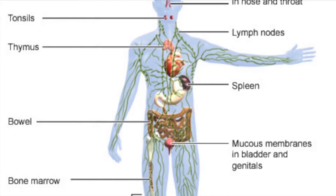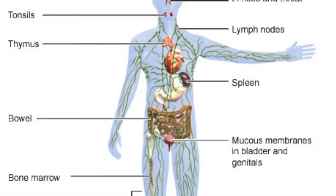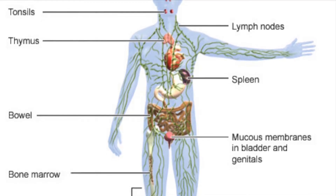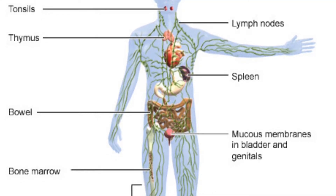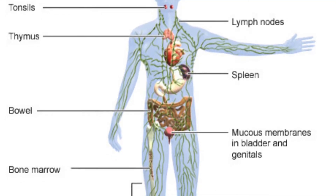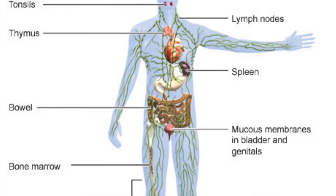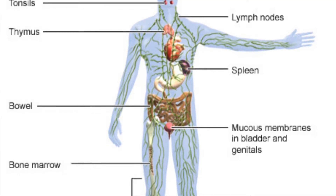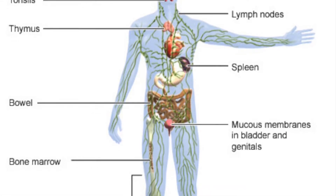Lymph nodes exchange substances like defense cells between the bloodstream and defensive tissues in the body. They also contain other defense cells to trap pathogens entering the body, triggering the production of antibodies.